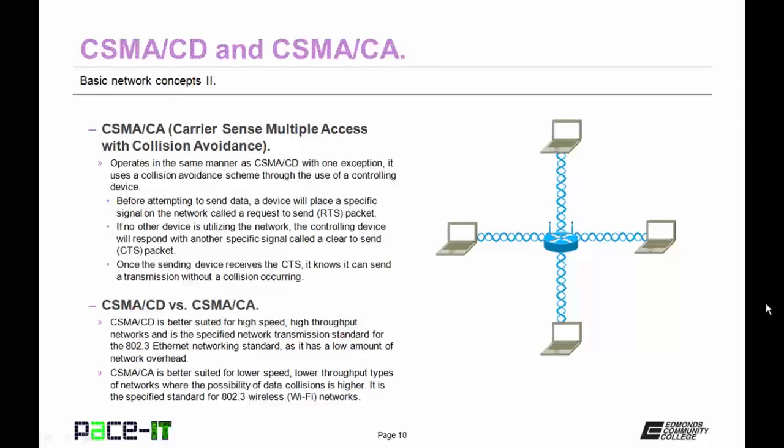CSMA/CD is better suited for high speed, high throughput networks and is the specified network transmission standard for the 802.3 Ethernet networking standard, as it has a low amount of network overhead. CSMA/CA is better suited for lower speed, lower throughput types of networks where the possibility of data collision is higher. It is the specified standard for 802.11 wireless networks, or Wi-Fi networks.